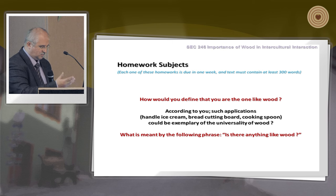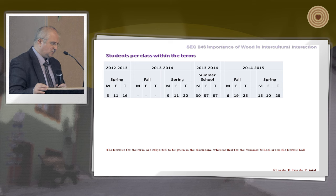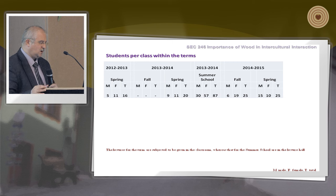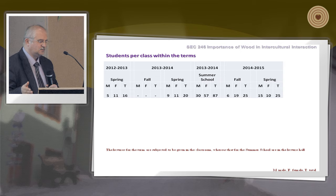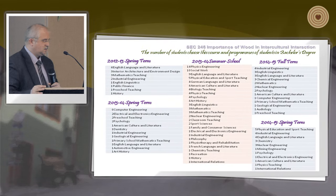These are the student attendance statistics. We started offering this course in spring 2013, with 16 students, of whom 11 were female. In 2014, there were 20 students. During summer school, students requested the course be offered, and 87 students enrolled — quite a large number. This year, in the fall semester there are 25 students, and in the spring semester another 25, still ongoing.